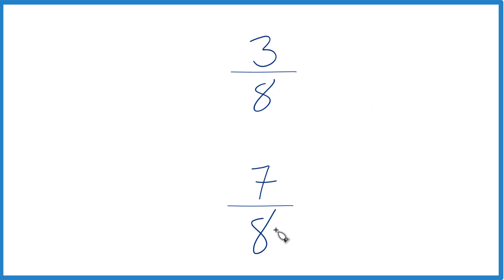Get a decimal, 7 by 8 and get a decimal, and you'd see that 7/8 is the bigger fraction. You could also do it this way: you can look at the denominator here which is 8.